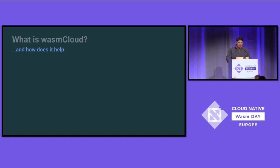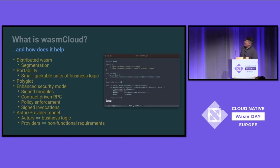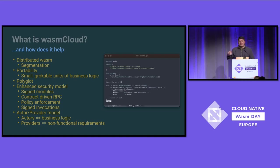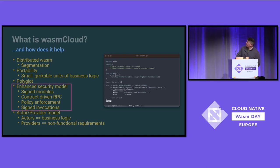Moving on to the next Lego block: WasmCloud. Now I need to distribute my app. I want it portable and polyglot. If we need 50 Postgres drivers, how annoying would that be? In WasmCloud, the Redis driver is written once in Rust. I don't have to use it — I'm going to do everything else in Go and interact via RPC with the Redis driver.